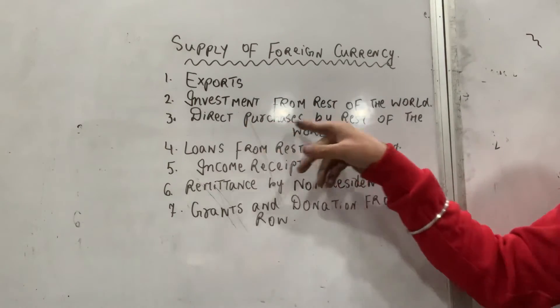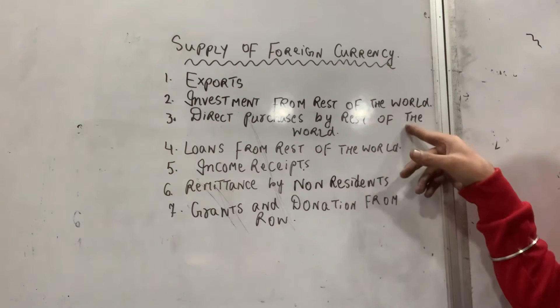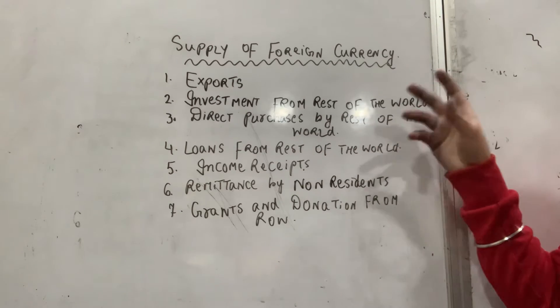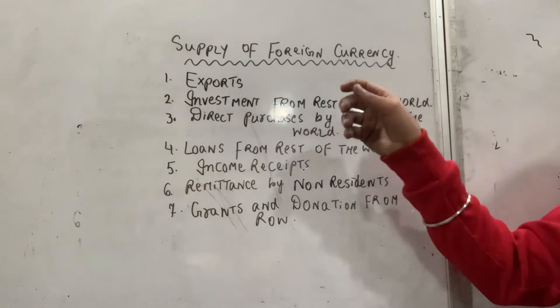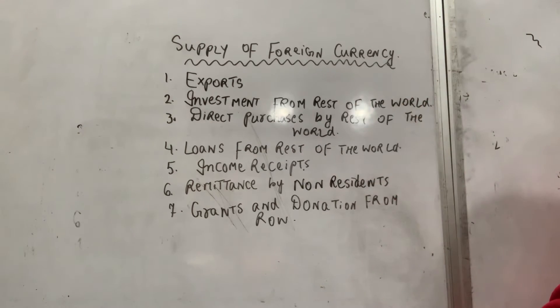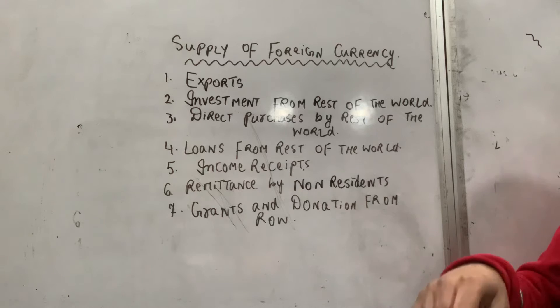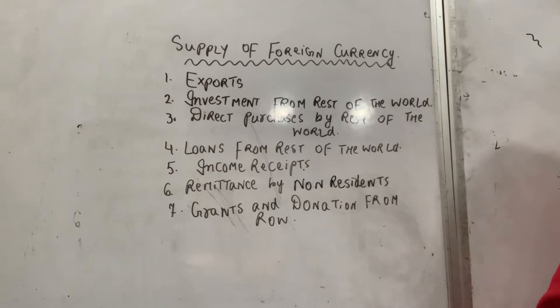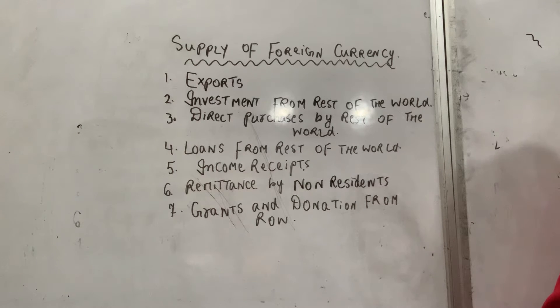Direct purchases by the rest of the world. One kind of person will always buy dollars. Suppose India has handicrafts and American people buy them — they will always buy dollars to make that purchase.